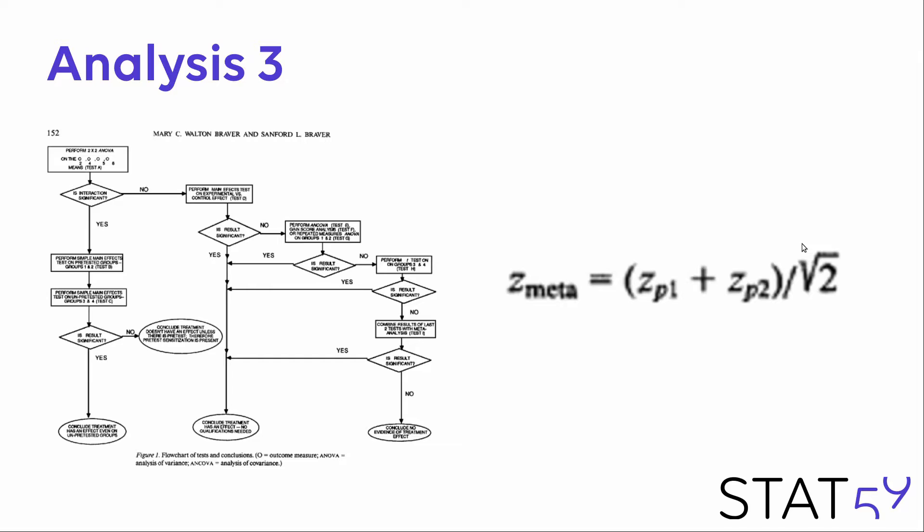The third part of the Solomon 4 group design analysis is where things get a little tricky, and this is one of the reasons people have traditionally shied away from the design. Here we can use a type of meta-analytic analysis to combine the effects of the pre-test and non-pre-test groups — in effect, combining all four groups into a single outcome measure. This is what allows the Solomon 4 group design to detect pre-test sensitization while maintaining the statistical power of a pre-test post-test design, though it can be tricky to implement.